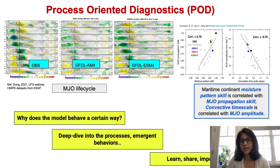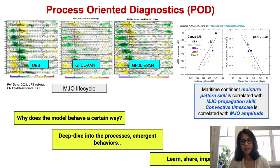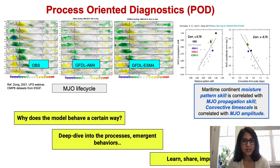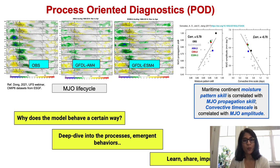And is this happening for the right reasons? The figure on the right-hand side explains the connection with moisture pattern skill, and we see how that correlates with MJO propagation skill in each of the models — just to validate things and make sure our model development is aligned with the processes themselves.